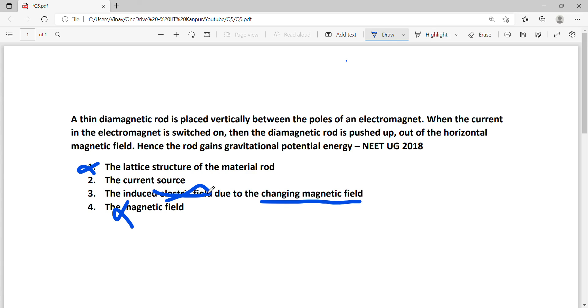It is the current source that causes the diamagnetic rod to go upward, and because of that, gravitational potential energy is generated. So the second option is correct.